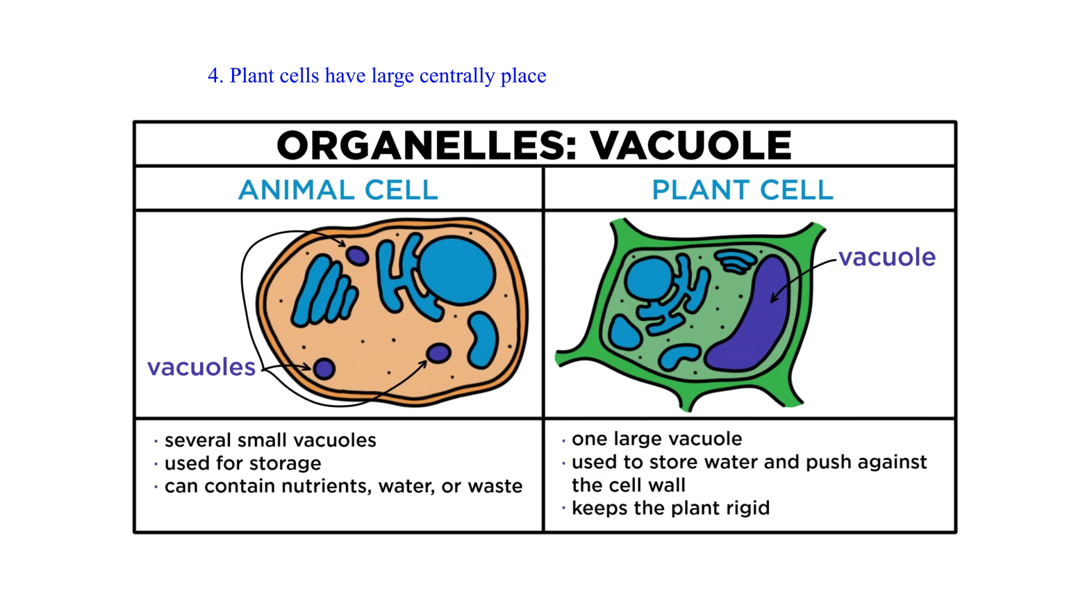4. Plant cells have large centrally placed vacuoles but in animal cells there are no vacuoles and when present they are often temporary and small.